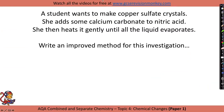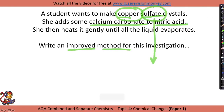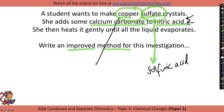Look out for a question on this practical similar to this one: a student wants to make copper sulfate crystals; she adds some calcium carbonate to nitric acid, then heats it gently until all of the liquid evaporates. Write an improved method for this investigation. The first thing to check is whether they're reacting the right things together. To make copper sulfate, you are going to need sulfuric acid — they have wrongly used nitric acid — and for the copper you will need some sort of base that has copper in it, for example copper oxide.